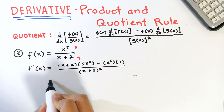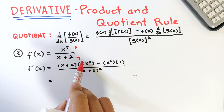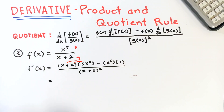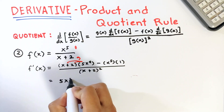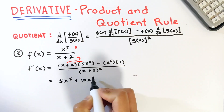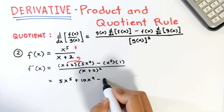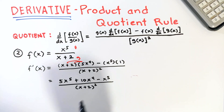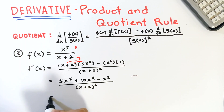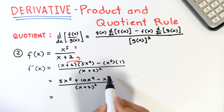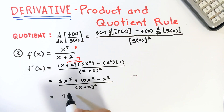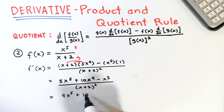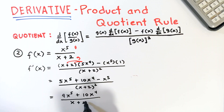For the denominator, we have g squared: x plus 2 squared. Then let's simplify. Distributing 5x raised to 4 gives us 5x raised to 5 plus 10x raised to 4, and then minus x raised to 5, all over x plus 2 squared. Simplifying further and combining like terms: 5x raised to 5 minus x raised to 5 is 4x raised to 5, plus 10x raised to 4, divided by x plus 2 squared. This is the final answer.